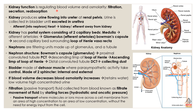The kidney produces urine flowing into the ureter at the renal pelvis. From the ureter it extends to the urethra, where the urine is collected in the bladder and excreted via the urethra.